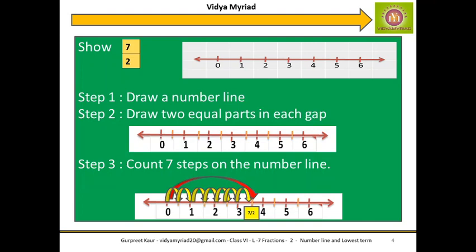I can even check this. What is 7 by 2? If I divide, I get 3.5. And you can easily see that the point which is represented is between 3 and 4. So our answer is totally correct. It is so simple — just see what is the numerator and what is the denominator.